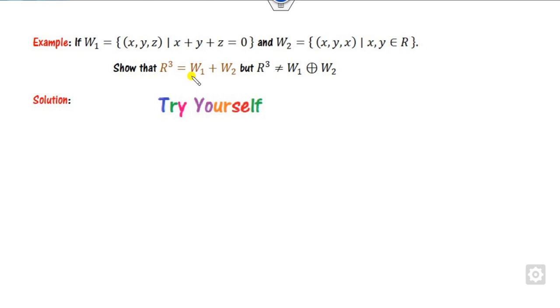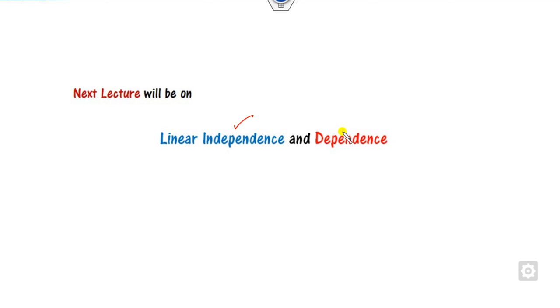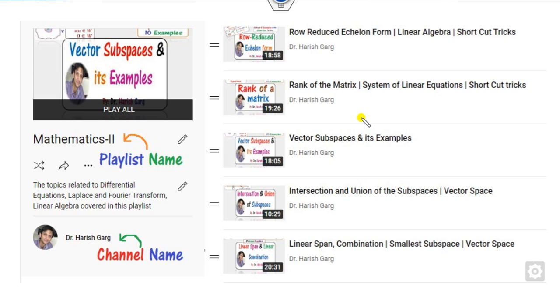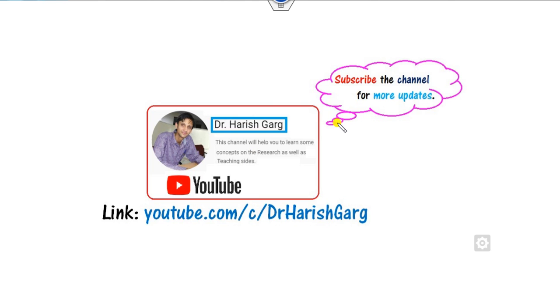Try this last example yourself — where the sum of elements is 0 and the first and third components are the same — and let me know your answer in the comment box. I hope you have learned these concepts simply. In our next class we will discuss linear independence and dependence of vectors. Till then, follow this playlist. Best of luck, students!